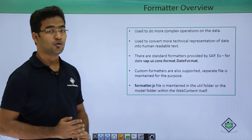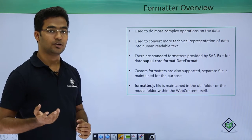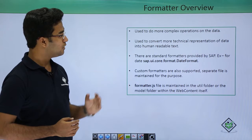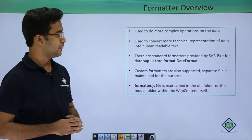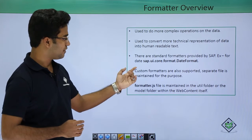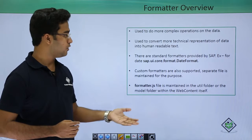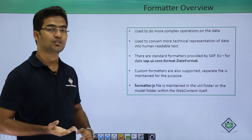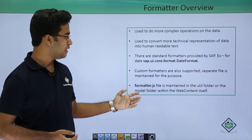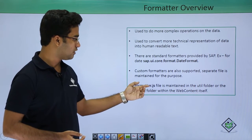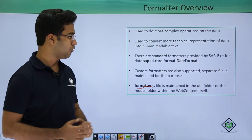Here we can see the overview of formatters. Formatters are used to convert more technical representation of data into human readable text, and they are used to perform more complex operations on data. SAP provides some standard formatters, for example sap/ui/core/format/DateFormat, and we can also use custom formatters. To use custom formatters we have to create a separate file — formatter.js — which is maintained in the util folder or the model folder.